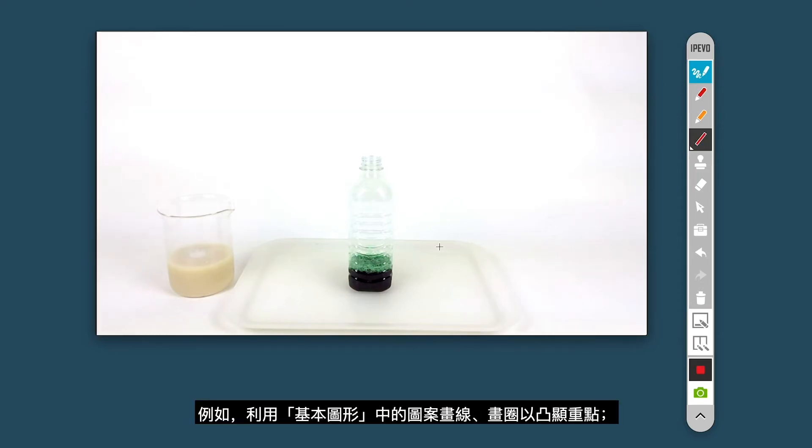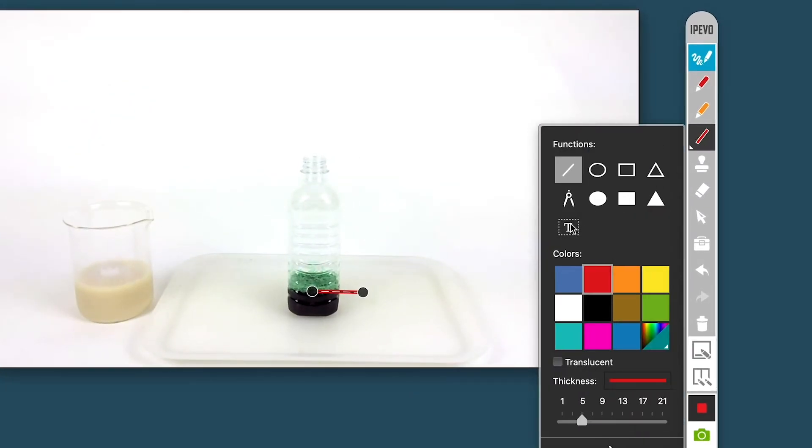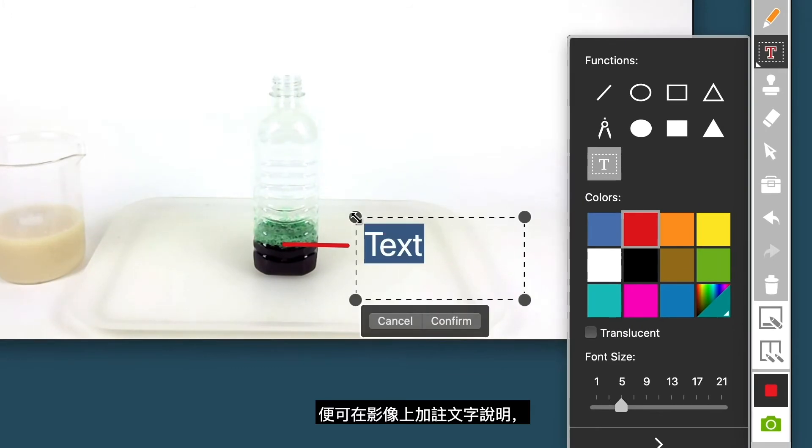You can use the shape tool to draw lines or circles to show something important, or click on the shape tool again and select the text tool. Now you can add customizable text.